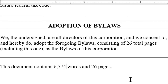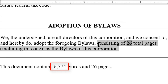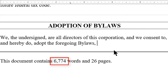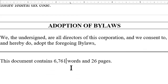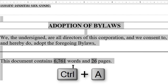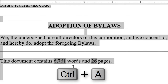Finally, let's talk about how to update our fields. In our test document, I will delete the last part of this sentence, but you'll see the number of words did not change. To be updated, the field or fields must be selected, then press F9. You can select the entire document by pressing Ctrl+A, then press F9 to update all the fields in your document.